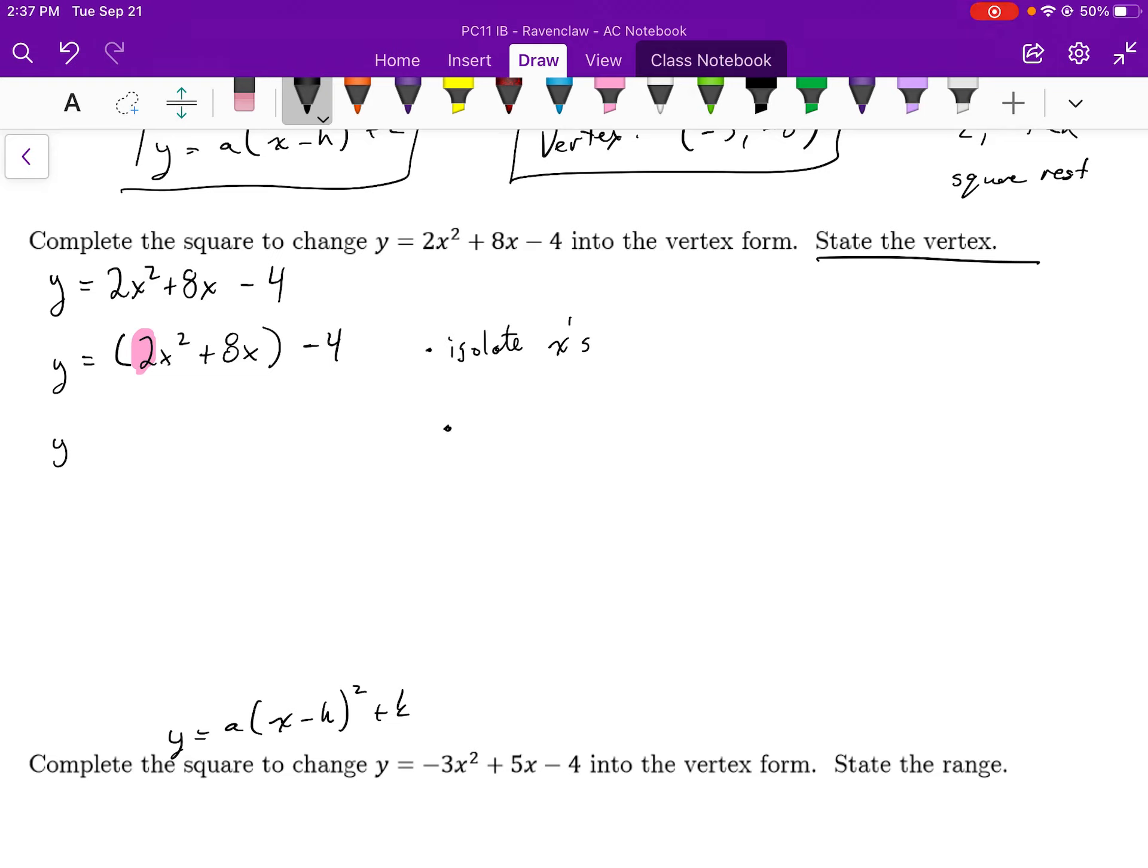So my next step here is I'm just going to say factor out a. And if I factor out a, I'm left with 2 times x squared plus 4x minus 4.